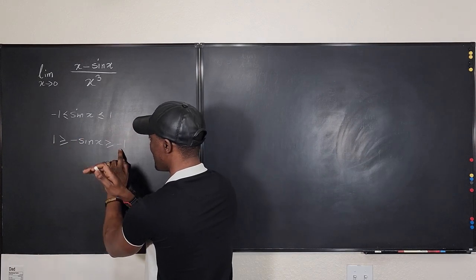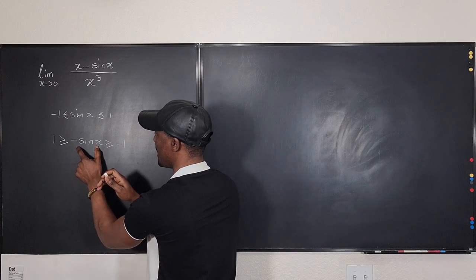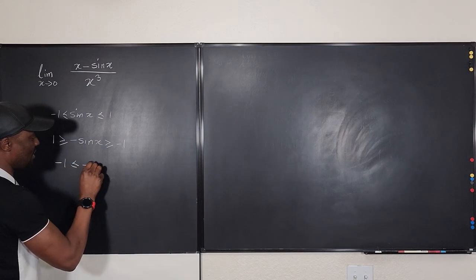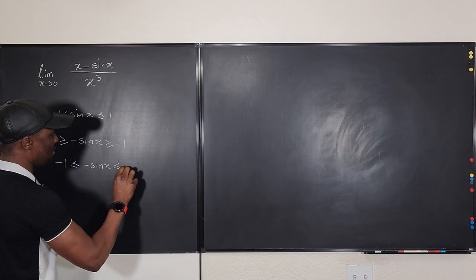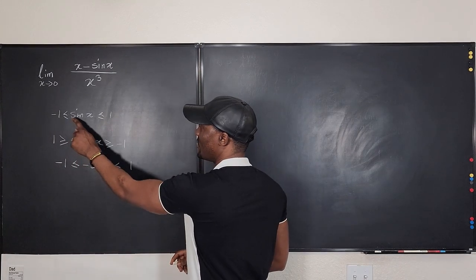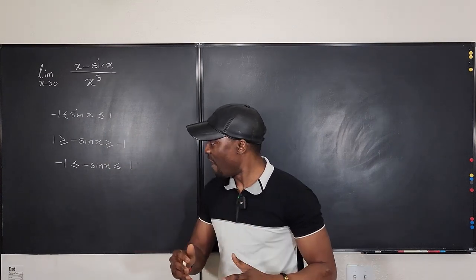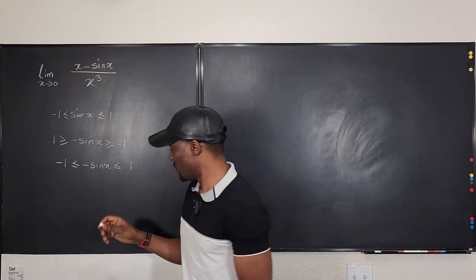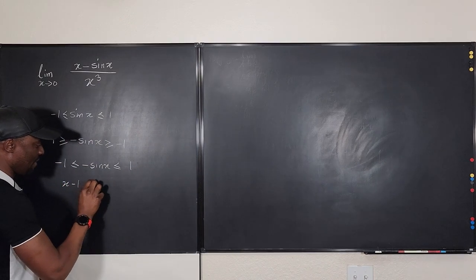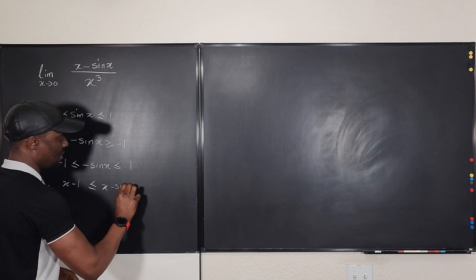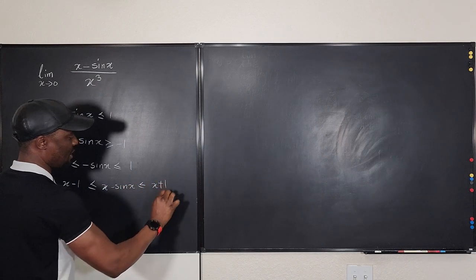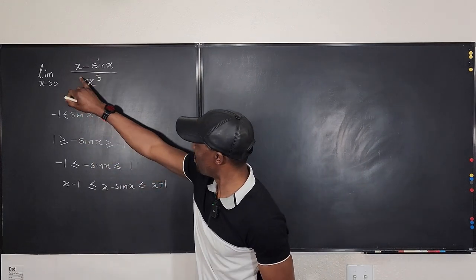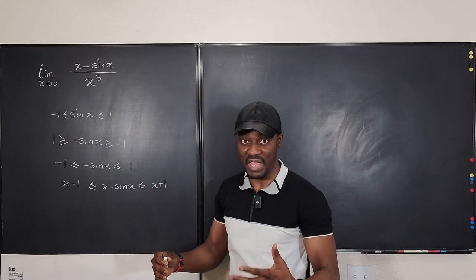Look, if I turn this around, it becomes negative 1 is less than or equal to negative sine x, which is less than or equal to 1. So I'm back to the beginning, I just changed this to negative sine x. Now, what's the next step? I need to bring in x, so I have to add x to negative sine x. So if I add x to both sides, this is going to become x minus 1 is less than or equal to x minus sine x, less than or equal to x plus 1. So the next thing to do is to introduce this part, which is going to be you divide every term by x cubed.